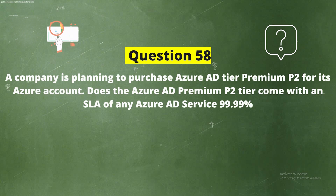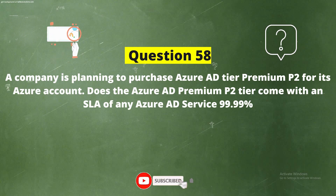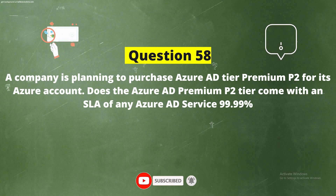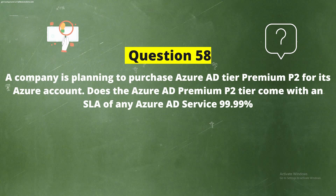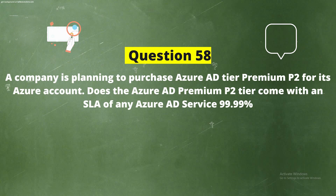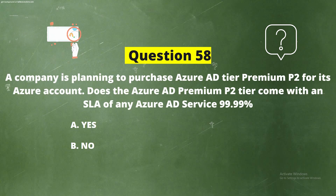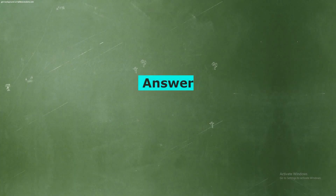Question 58: A company is planning to purchase Azure AD tier Premium P2 for its Azure account. Does the Azure AD Premium P2 tier come with an SLA of 99.99% for any Azure AD service? The correct answer is Option A, Yes.